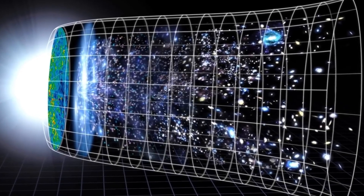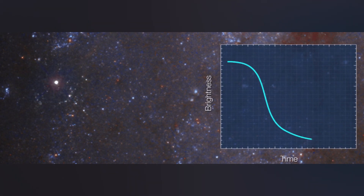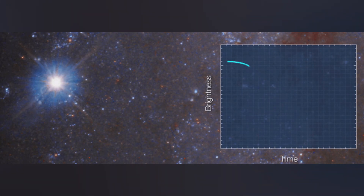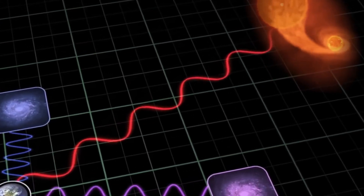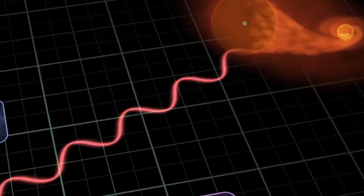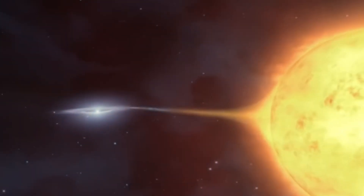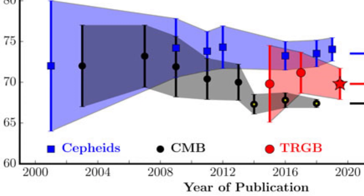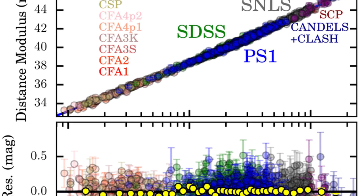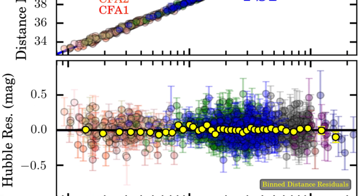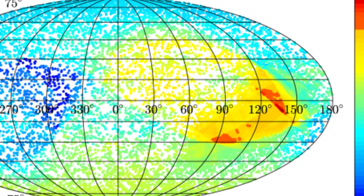Type Ia supernovae, characterized by their remarkably consistent brightness, offer an effective means of gauging cosmic distances. By comparing a supernova's apparent brightness with its intrinsic luminosity and gauging the redshift of its light, we can deduce both its distance and velocity relative to us. By amalgamating the distances and velocities of numerous supernovae, we can determine the Hubble constant. The Pantheon sample is the most extensive and contemporary compilation of Type Ia supernova data, comprising over 1,000 supernovae sourced from various surveys.